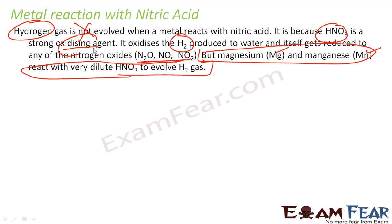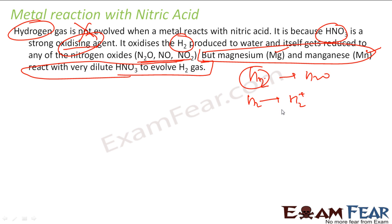Nitric acid is a strong oxidizing agent — it oxidizes the hydrogen formed to water. However, magnesium and manganese are exceptions: they react with nitric acid to also form hydrogen gas. Other metals, when reacted with nitric acid, will not form hydrogen gas due to nitric acid's strong oxidizing nature.